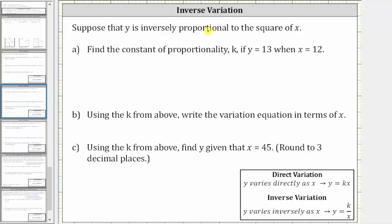Suppose that y is inversely proportional to the square of x. Whenever we are told that y is inversely proportional, or y varies inversely, we have inverse variation.